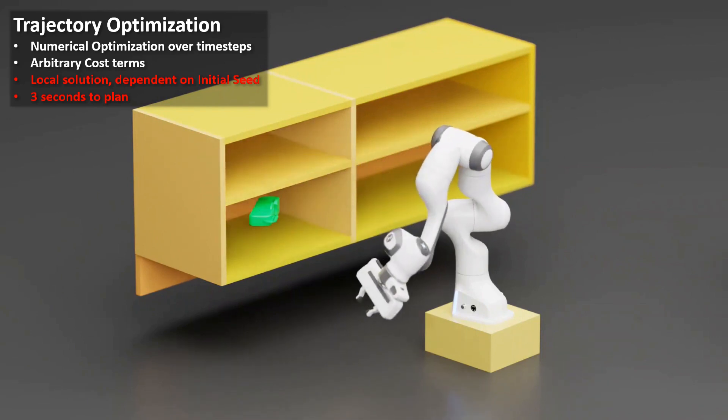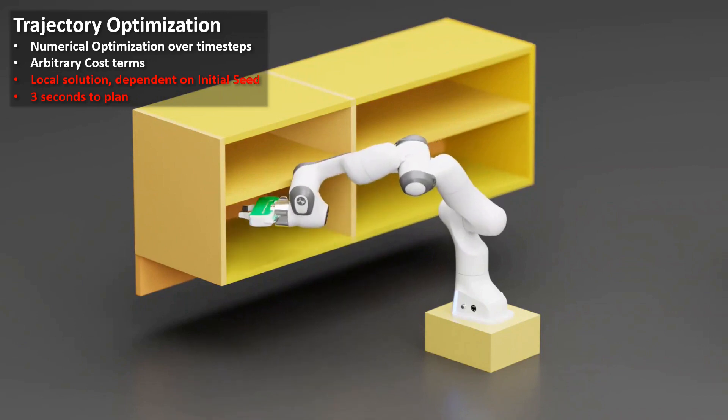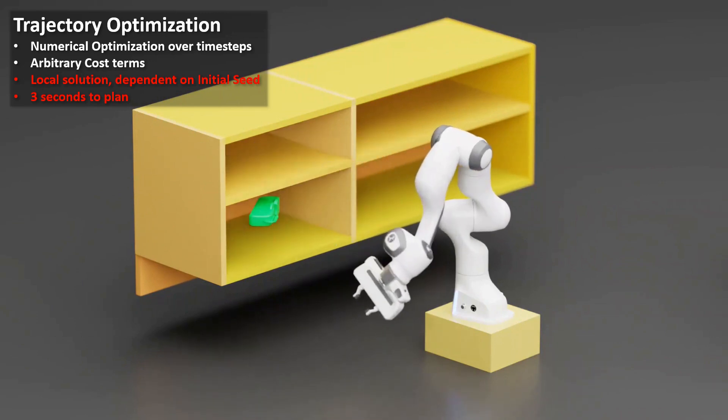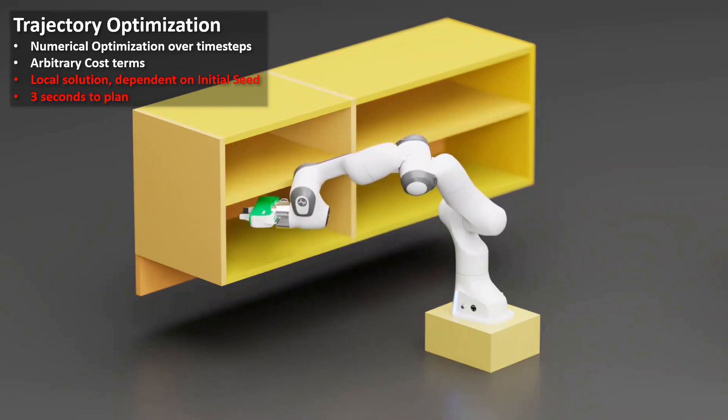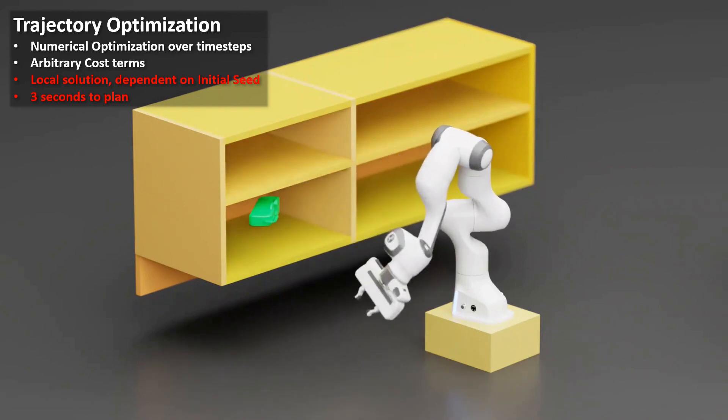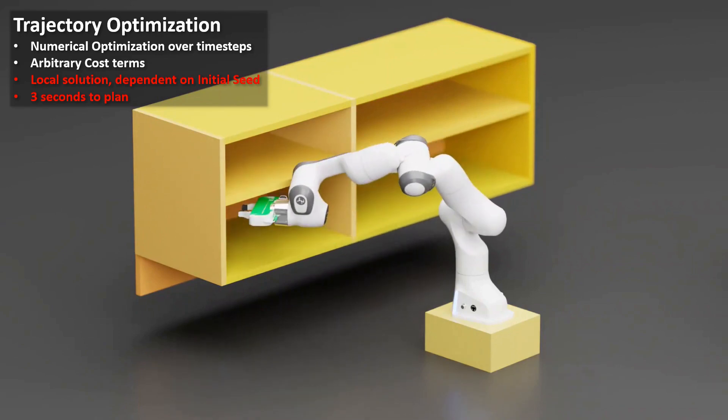One way to overcome this local minima issue is to use a collision-free path from a graph planner as a seed, and then perform trajectory optimization from this seed. This has been done by several research papers and even by standard motion planning libraries. However, this initialization can lead to a suboptimal solution as it only locally adjusts the path from the graph seed.